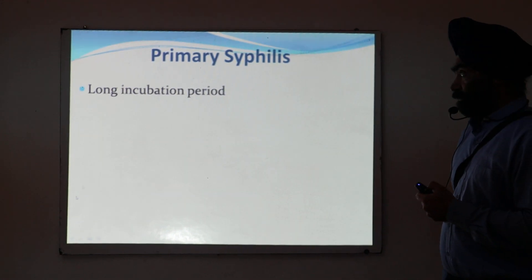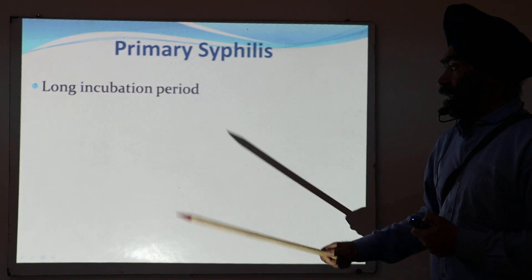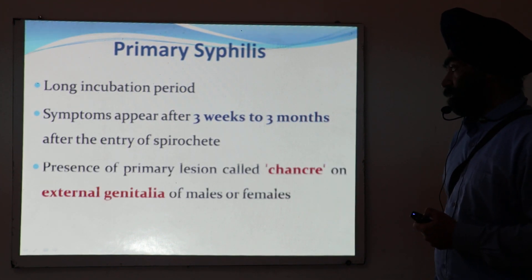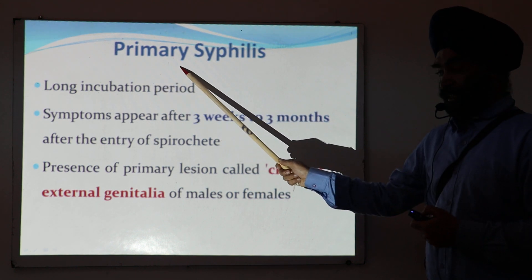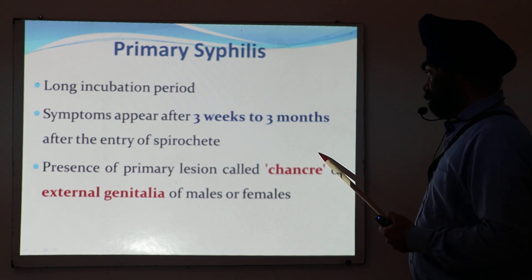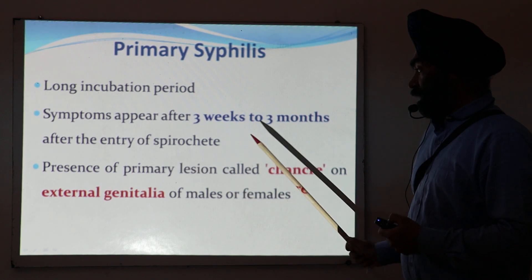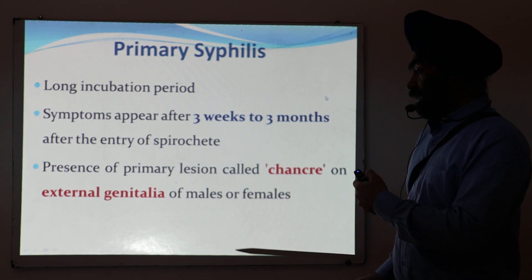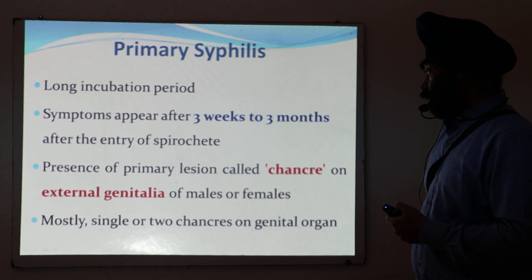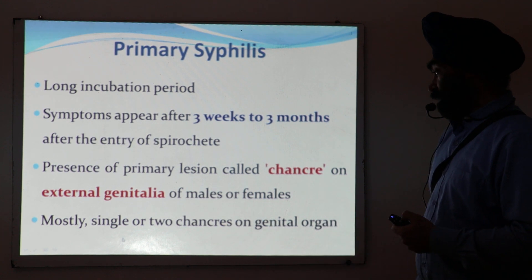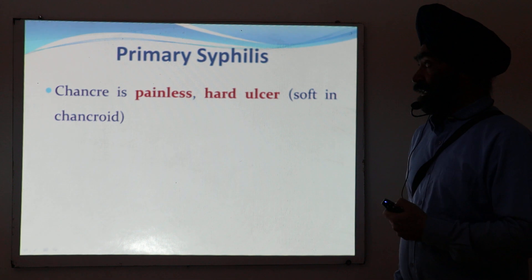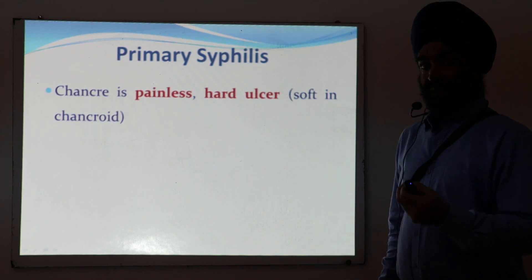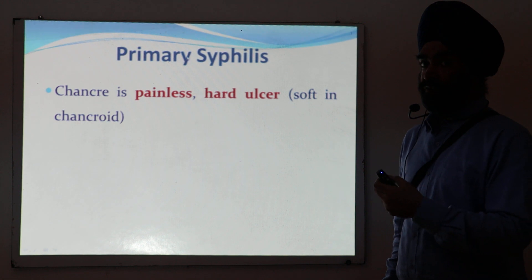Coming to primary syphilis: there is a long incubation period, and symptoms may appear three weeks to three months after entry of the spirochete. The major characteristic feature of primary syphilis is the presence of a chancre, which is the primary lesion. It is present on the external genitalia of male or female — typically one or two chancres on the genital organ. The chancre is painless and hard in nature.